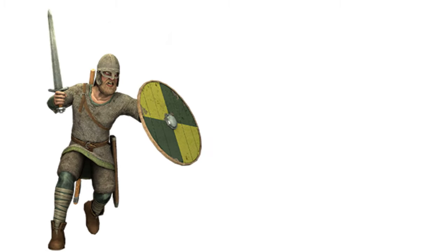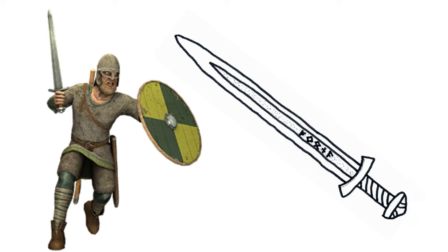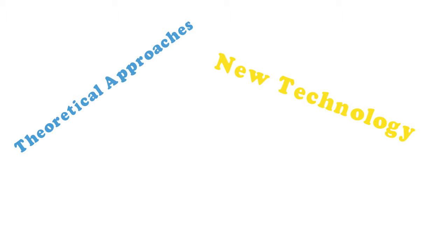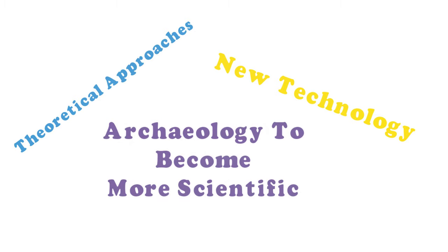For example, a sword might be used as a weapon but the gold handle may denote the owner's upper-class social status and the symbol engraved on the blade might invoke religious protection. Theoretical approaches and the use of new technologies was what new archaeologists aimed to use in order to make archaeology more scientific.